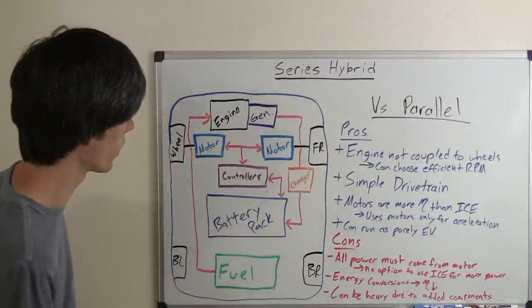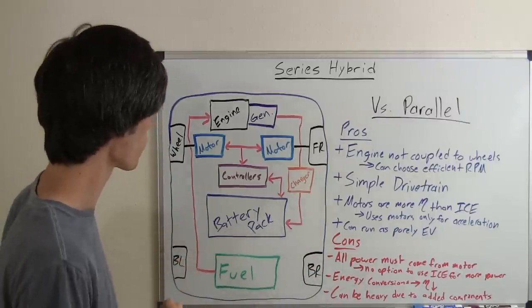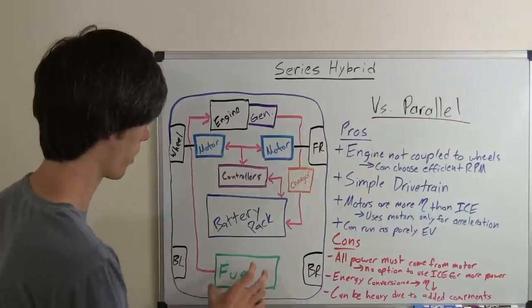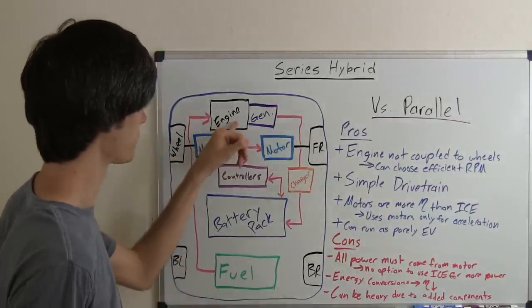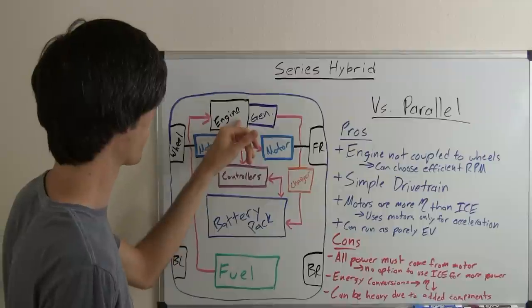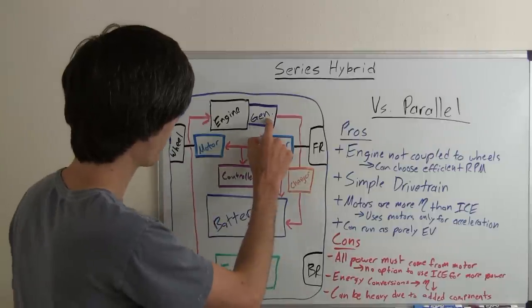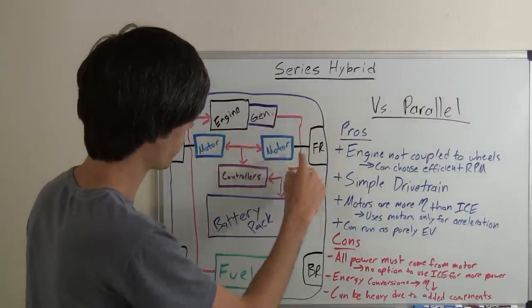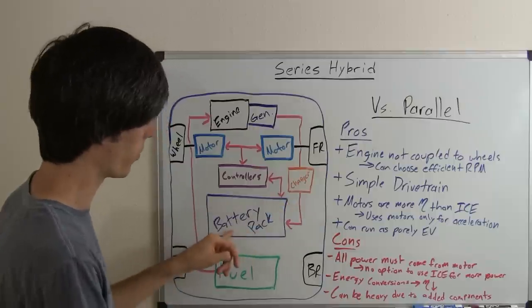Here I've got a diagram drawn out a little more detailed than I went over in my hybrid video. Basically what we've got going on is a fuel tank that sends gasoline to the engine. The engine uses that gasoline to power itself and power a generator.